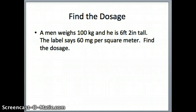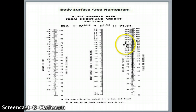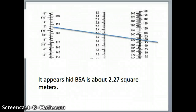With 100 kilograms and 6 feet 2 inches tall, we locate those values on the nomogram. 100 kilograms is about here on the weight in kilograms side. 6 feet 2 inches is about there on the height side. So we draw the line between those two points to see what the body surface area is for that individual.